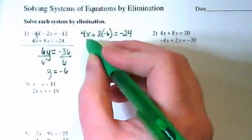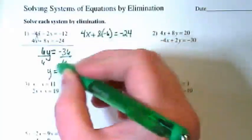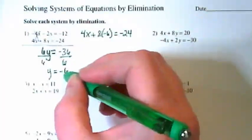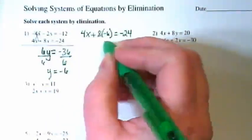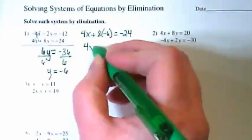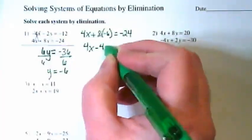We're going to get 4x plus 8 times negative 6, because I took the y equals negative 6 and I plugged it into the y. It's equal to negative 24. I get 4x is equal to negative 48.